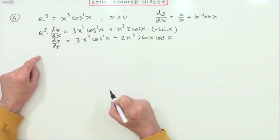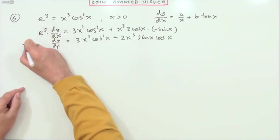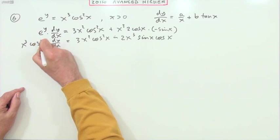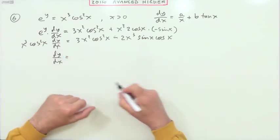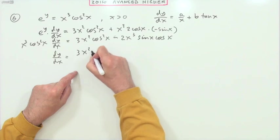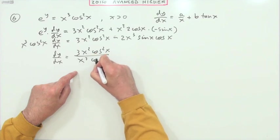And at the same time putting that e to the y back in as x cubed cos squared x. So dividing through by that, I'll just show it anyway: 3x squared cos squared x over x cubed cos squared x.